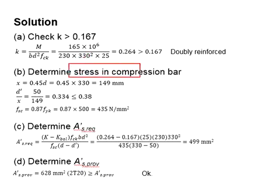Next, you need to determine the stress in the compression steel bar. To do that, you need to find the ratio of d prime divided by x. The x is assumed to be 0.45d, which is equal to 149. And the ratio of d prime per x will be 0.334, which is less than 0.38. When the ratio is less than 0.38, you know that the compression steel bar has already yielded. Therefore, you're going to use the bar strength multiplied with a factor of 0.87, and you will get the compressive stress in the bar equals to 435 newton per millimeter squared.